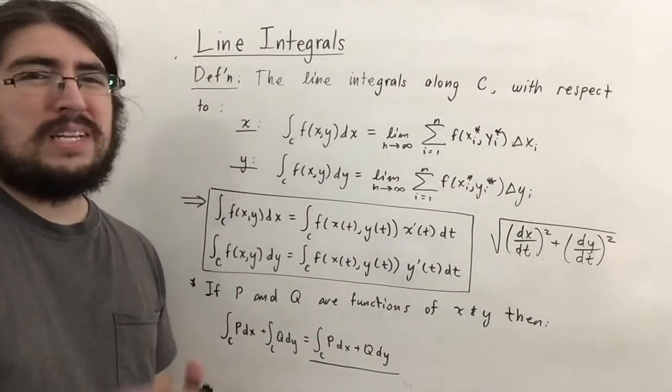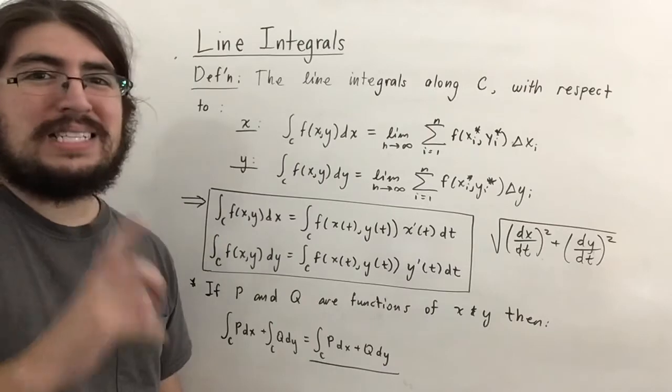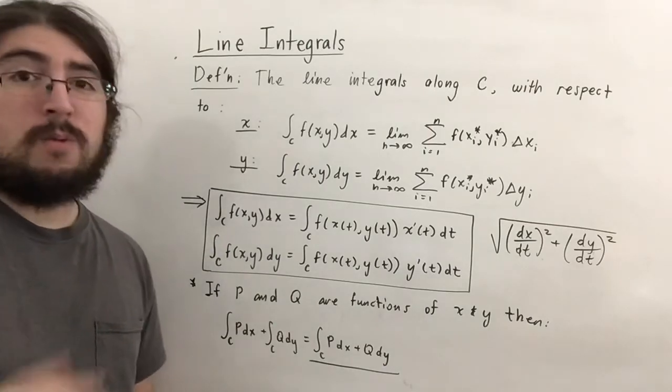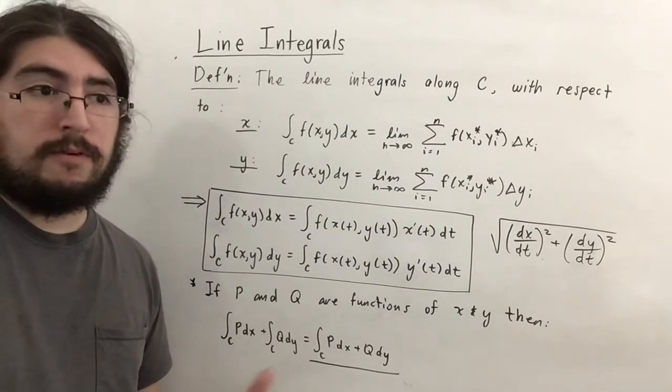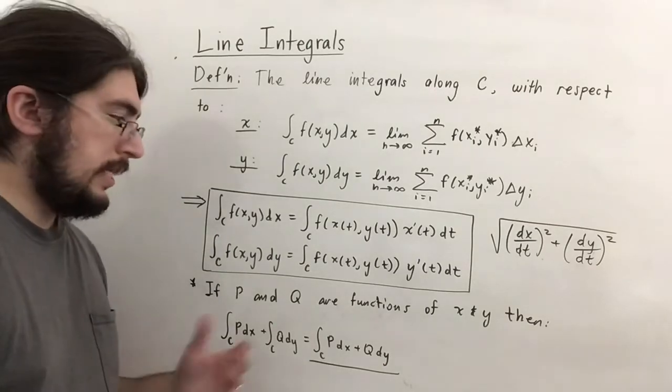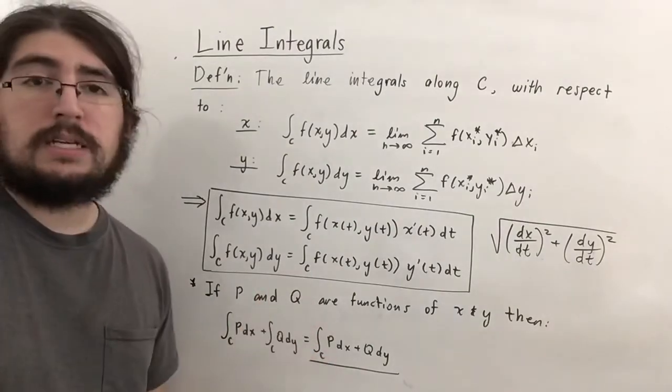If p and q are functions of x and y, the integral along c of p dx plus the integral along c of q dy can be written together as the integral along c of p dx plus q dy. This combined notation is customary, and we'll see an example of this right now.